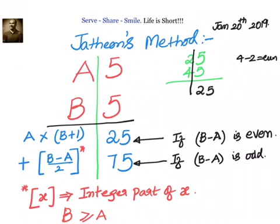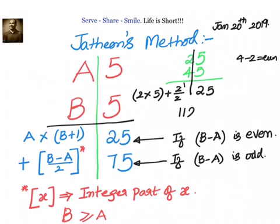For the left-hand side: 2 into 4 plus 1, that is 2 into 5, plus the integer part of 4 minus 2 by 2. That is 2 by 2 equals 1. So 2 into 5 is 10, and 10 plus 1 equals 11. The answer is 1125.